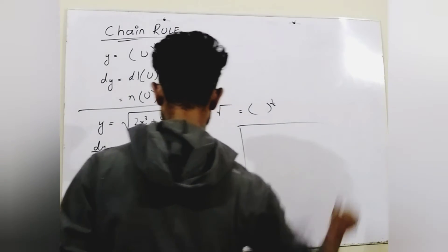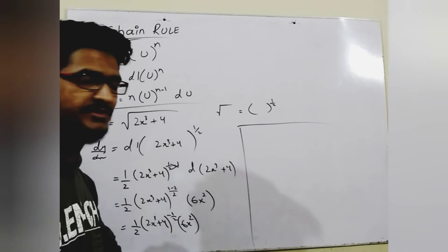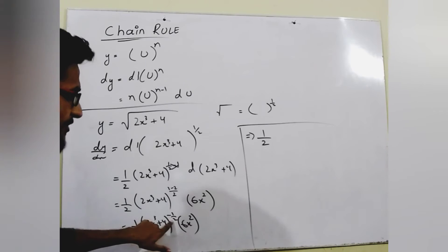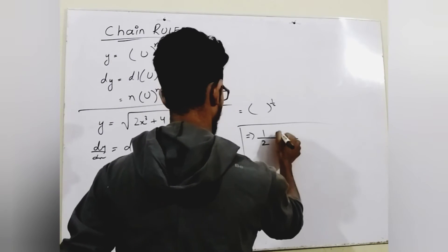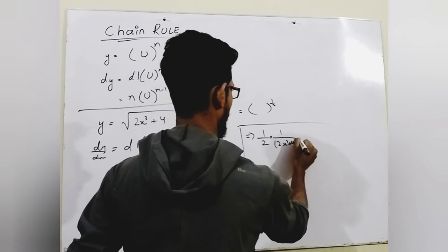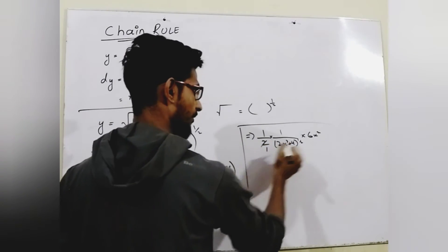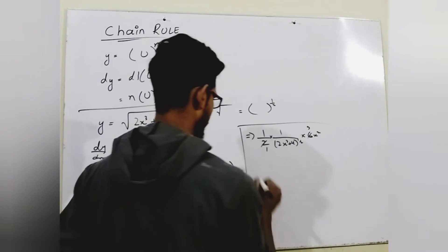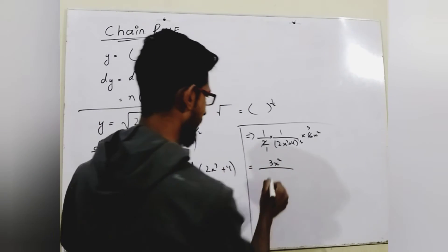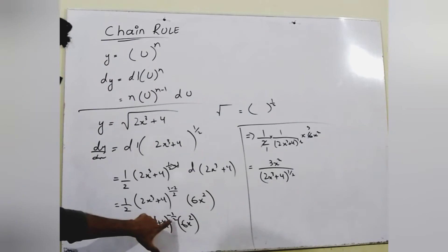Remember: whenever we have a negative power, we reciprocate the expression to make it positive. So to make this expression positive, we shift it to the denominator. It becomes 6x² divided by 2 times (2x³ + 4) to the power 1/2. Now 2 and 6 cancel out, leaving 3. So the numerator becomes 3x² and the denominator is (2x³ + 4) to the power 1/2, which is now positive.